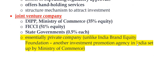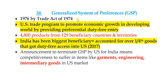India Brand Equity Foundation (IBEF) is a public company — unlike Invest India — set up by the Ministry of Commerce as another investment promotion agency. The Generalized System of Preferences (GSP) was started in 1976 under the Trade Act of 1974. It is a US trade program to promote economic growth in the developing world by providing preferential duty-free entry for 4,800 products from 129 beneficiary countries. India has been the biggest beneficiary, accounting for over one-fourth of goods getting duty-free access to the US in 2017. The US announcement to terminate GSP for India means Indian competitiveness will suffer in garments, engineering, and intermediary goods in the US market.